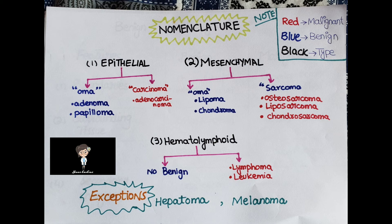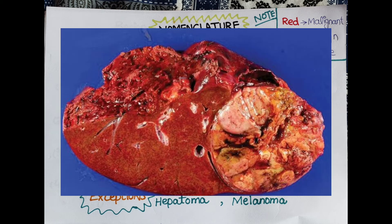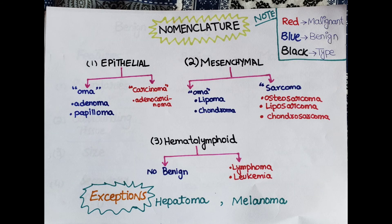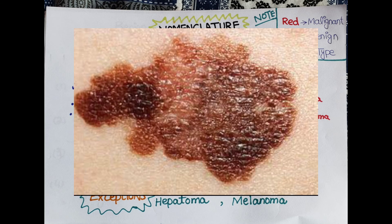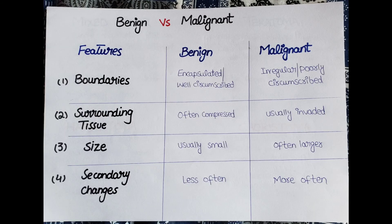For hematolymphoid tumors, there are generally no benign tumors — we have lymphoma and leukemia. Unfortunately, like all nomenclatures, this one also has exceptions. Some tumors sound benign by having '-oma' as suffix but are actually malignant — for example, hepatoma, which is a malignant liver cell tumor (correctly called hepatocellular carcinoma). Similarly, melanoma is malignant despite having the '-oma' suffix, arising from melanocytes.